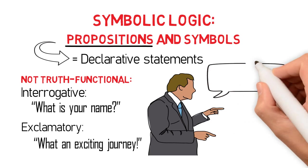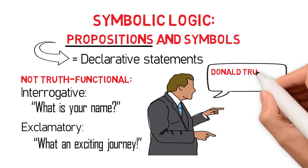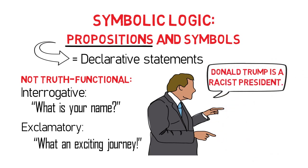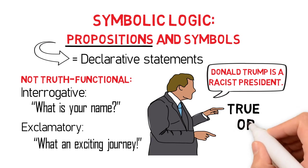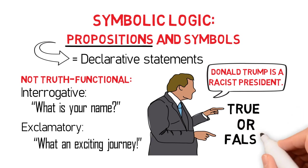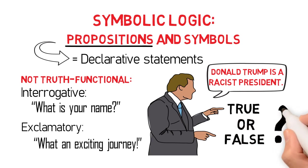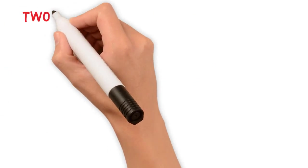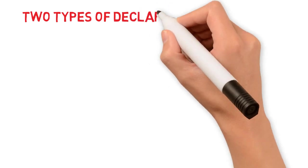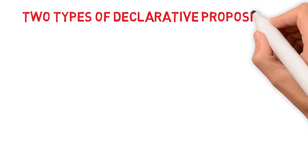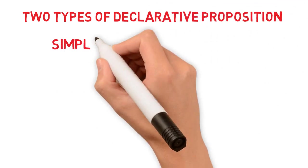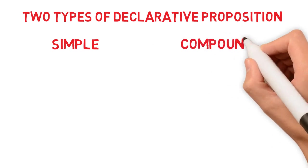Think, for example, of the proposition 'Donald Trump is a racist president.' Depending on the context, we may say it is true, or we may say it is false that Donald Trump is a racist president. There are two types of declarative proposition used in symbolic logic, namely simple and compound proposition.